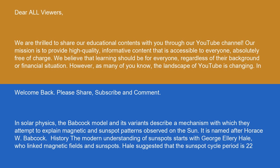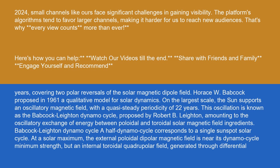The history of the modern understanding of sunspots starts with George Ellery Hale, who linked magnetic fields and sunspots. Hale suggested that the sunspot cycle period is 22 years, covering two polar reversals of the solar magnetic dipole field. Horace W. Babcock proposed in 1961 a qualitative model for solar dynamics.